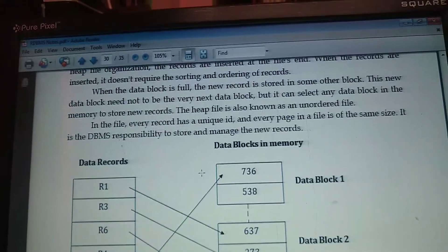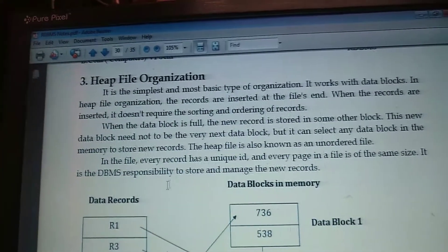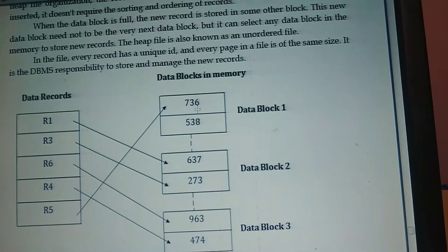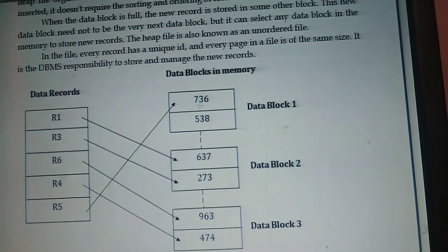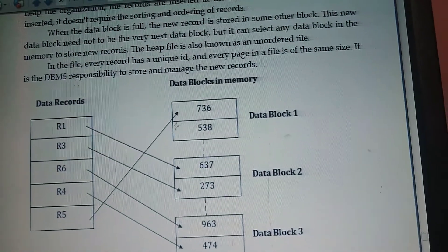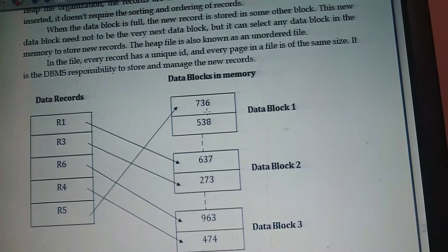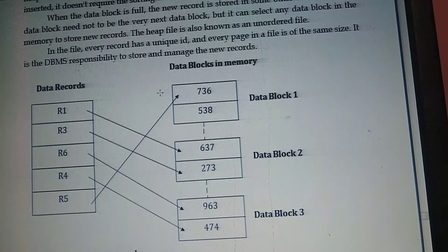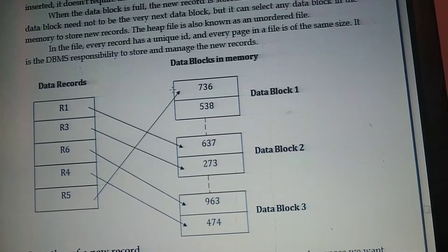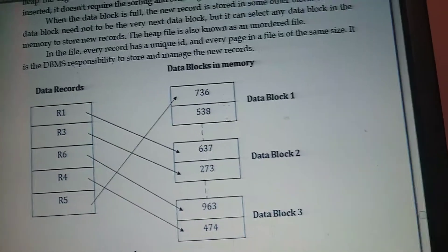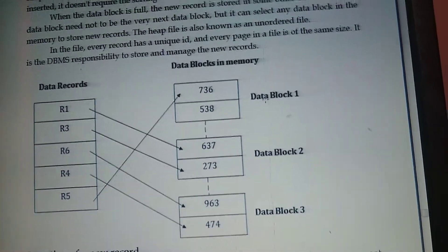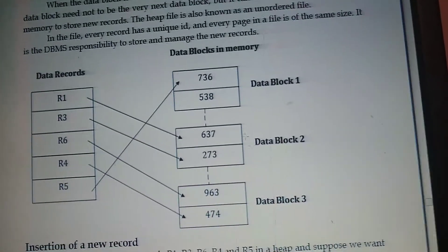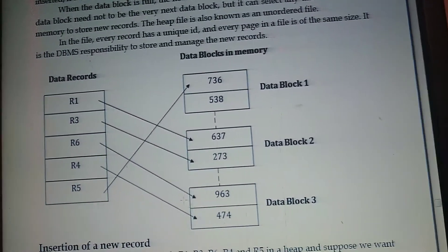The records are stored at the file's ending. Generally, this is a data block. Every data block has a collection of data storage units — memory locations. Every area in the computer memory has some address. A group of addresses, a group of locations, is called a block. That block will be treated and organized by the DBMS itself.